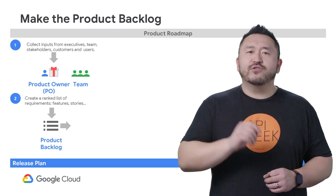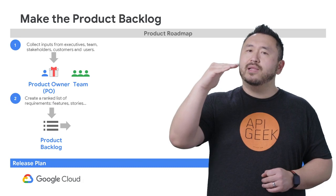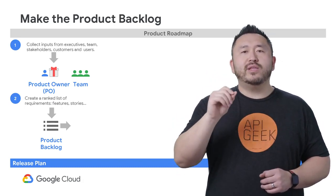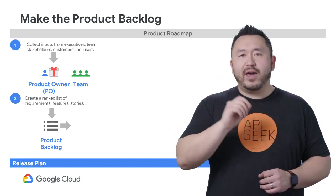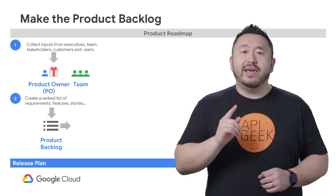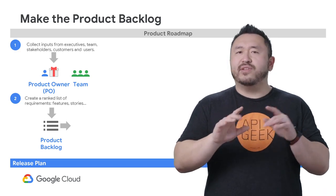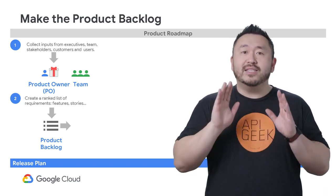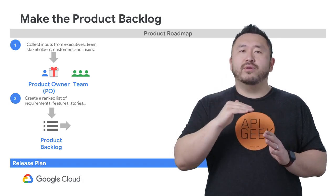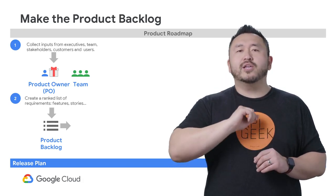Now that you have the scope of your first release, it should be quickly turned into a ranked list of requirements in step two. These requirements are written in the form of epics and user stories. Often at this point, the habit is to go into a lot of requirements detail — don't. Instead of going deep, list all the high-level features and requirements. If you're spending more than a week on this, you're likely going too deep.